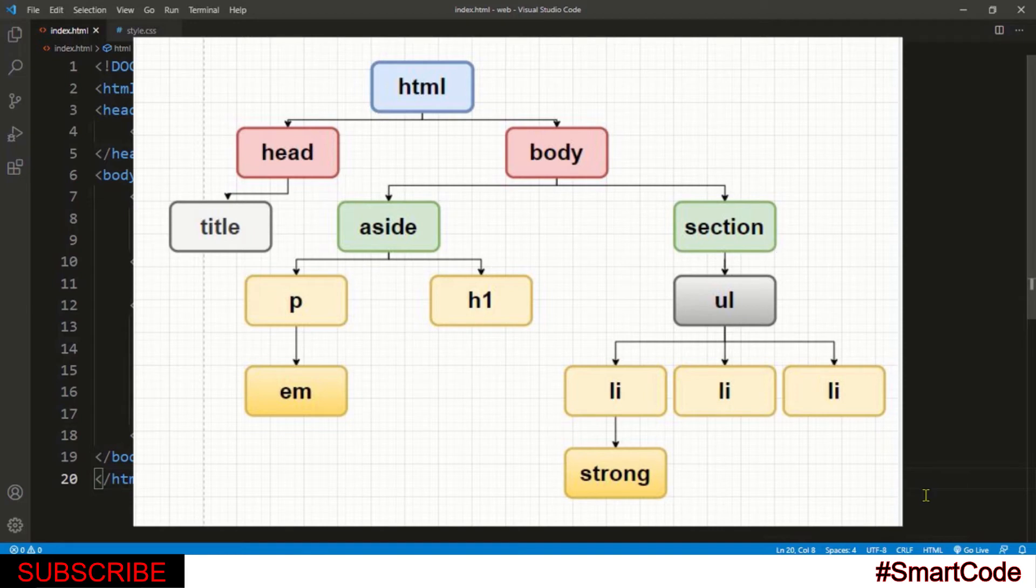Let's now talk about parent and child relationship. The HTML tag has two children, the head and the body tag. Children are directly descendant from the parent with no additional tag in between. So the HTML tag is parent to the head and the body.